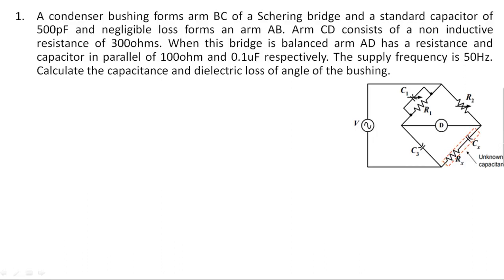In this video, I am going to explain two more problems very important in the calculation of Schering bridge unknown components. In this problem, I am going to explain the calculation of unknown capacitance, which you have already seen. Along with that, we are also going to calculate the angle of bushing — the angle of bushing indicated by delta. I am taking the same Schering bridge pattern I explained in the first class of the Schering bridge.